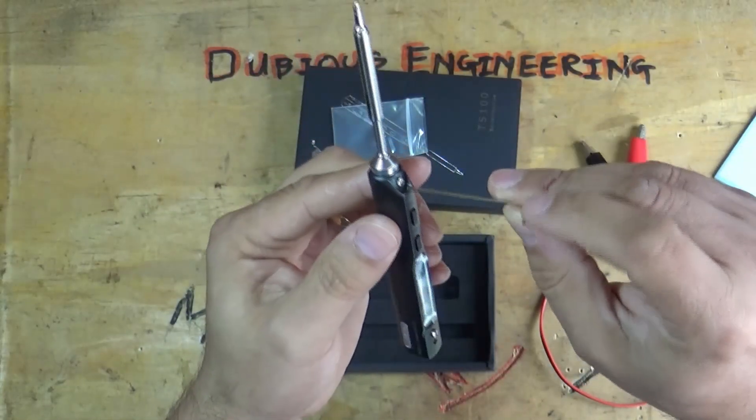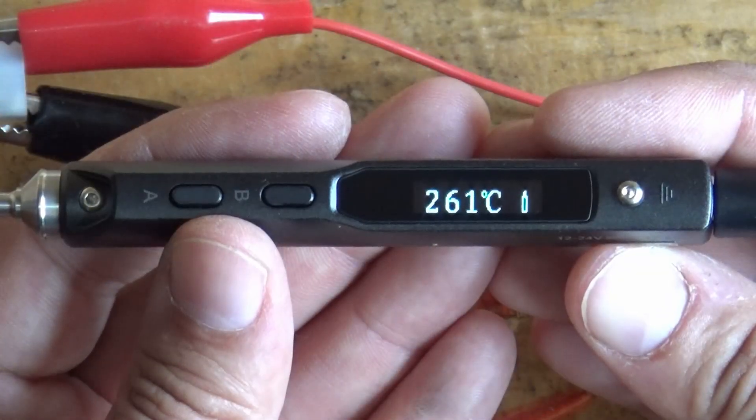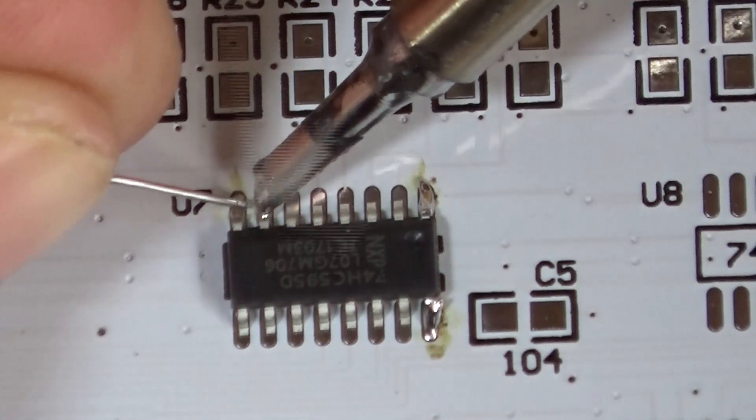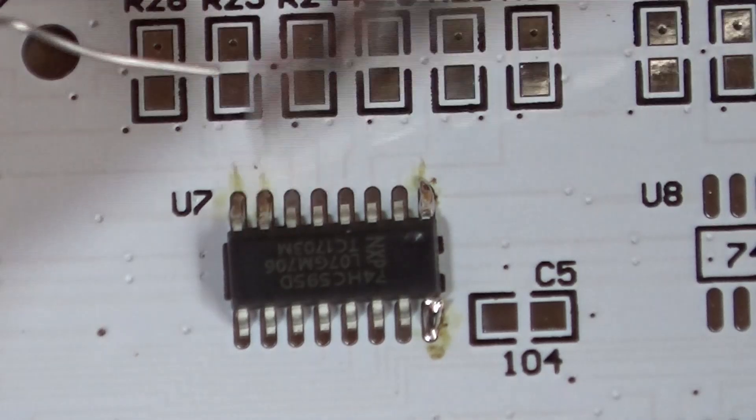Hello and welcome back to Dubious Engineering. Today we're going to be looking at a TS-100 soldering iron. These are wonderful little bits of kit. I've been quite impressed with it actually.